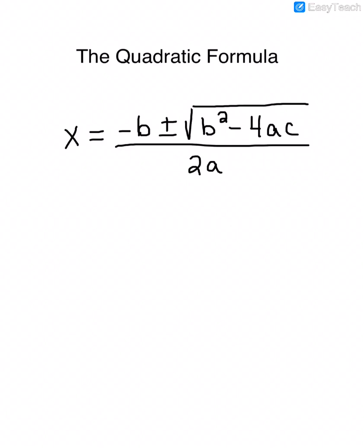x equals negative b plus or minus the square root of b squared minus 4ac, all over 2a. If you google 'quadratic formula song,' there are all different kinds of songs — people have put this formula to all different tunes. It is an important formula that you will use not only in this class but in future math classes also. So memorize this formula.